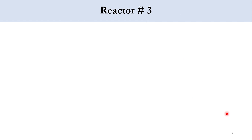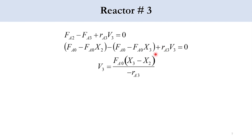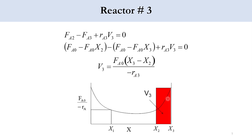For the third reactor, a CSTR, we apply the general mole balance: FA2 - FA3 + rA3·V3 = 0. Substituting FA2 = FA0 - FA0·X2 and FA3 = FA0 - FA0·X3, the FA0 terms cancel, leaving FA0·(X3 - X2) = (-rA3)·V3. Rearranging: V3 = FA0·(X3 - X2) / (-rA3), represented by the corresponding rectangular region.